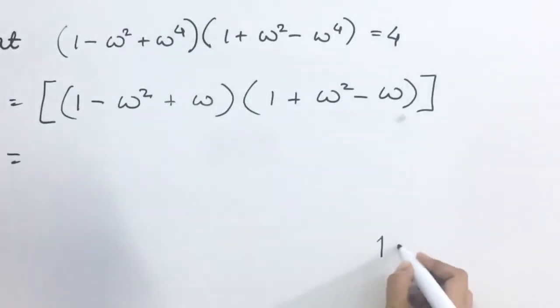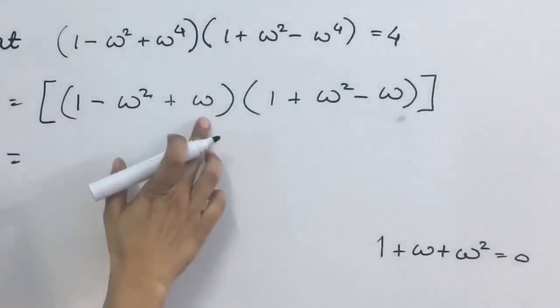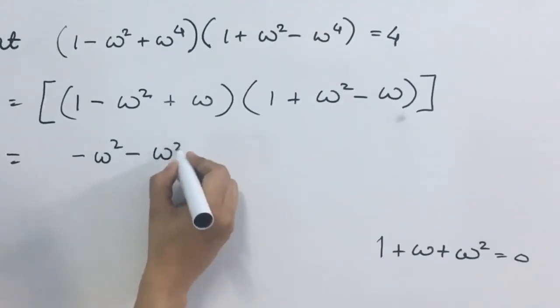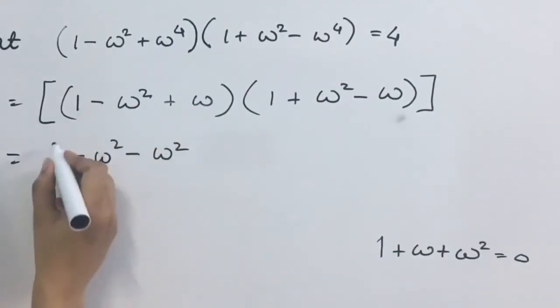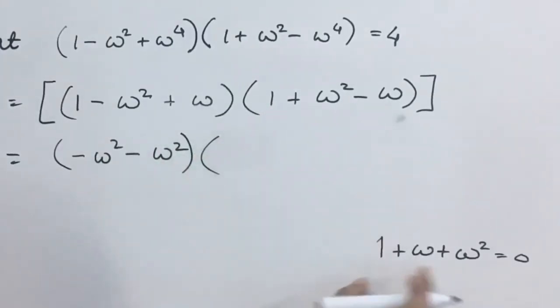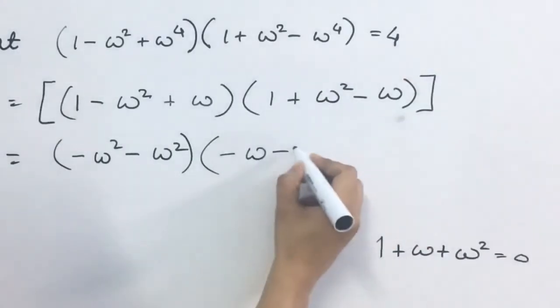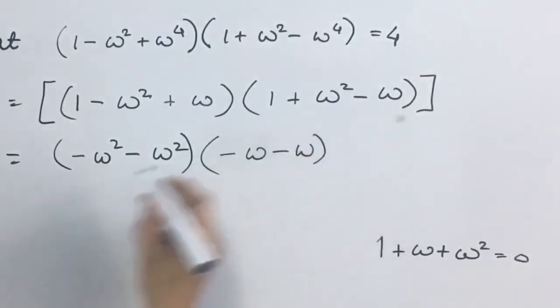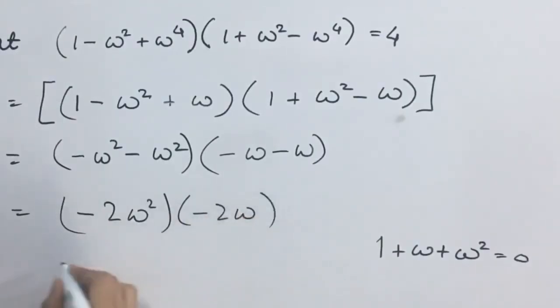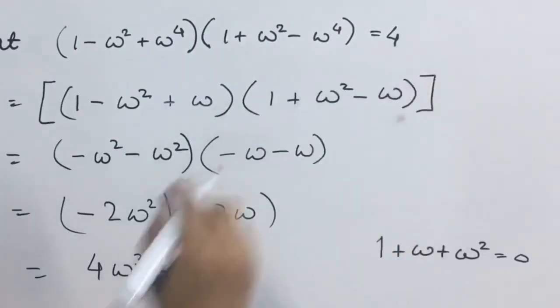We will use this relation here. So 1 plus omega is equal to minus omega square. Minus omega square, this will be minus omega square. And the other thing is, 1 plus omega square is minus omega. So this is minus omega and this minus omega. This gives minus 2 times of omega square into minus 2 times of omega. This gives you 4 omega cube. That is equal to 4 which is your right hand side.